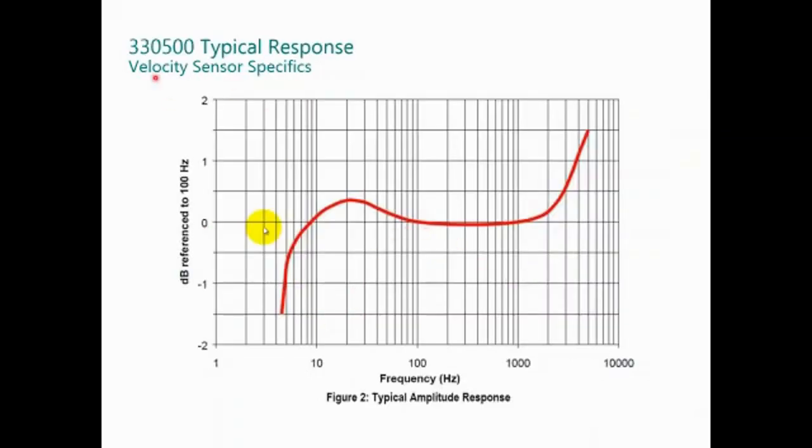Now the typical response. This is the part number for velometer, 330500. The typical response is starting at 10 Hz and the maximum is around 5000 Hz. All the testing is specified at 100 Hz. This is specified in the datasheet.